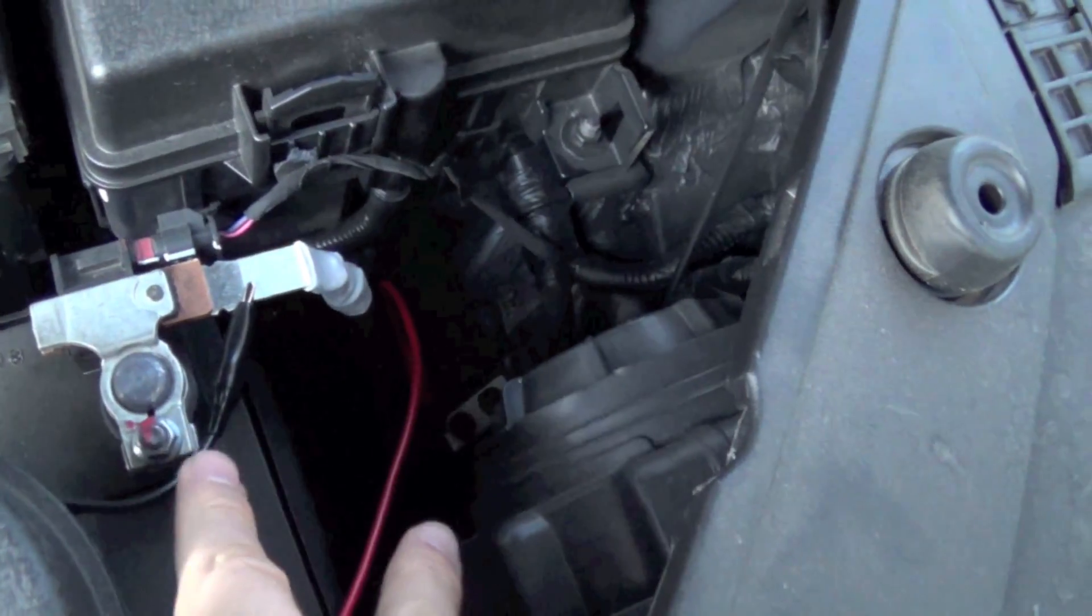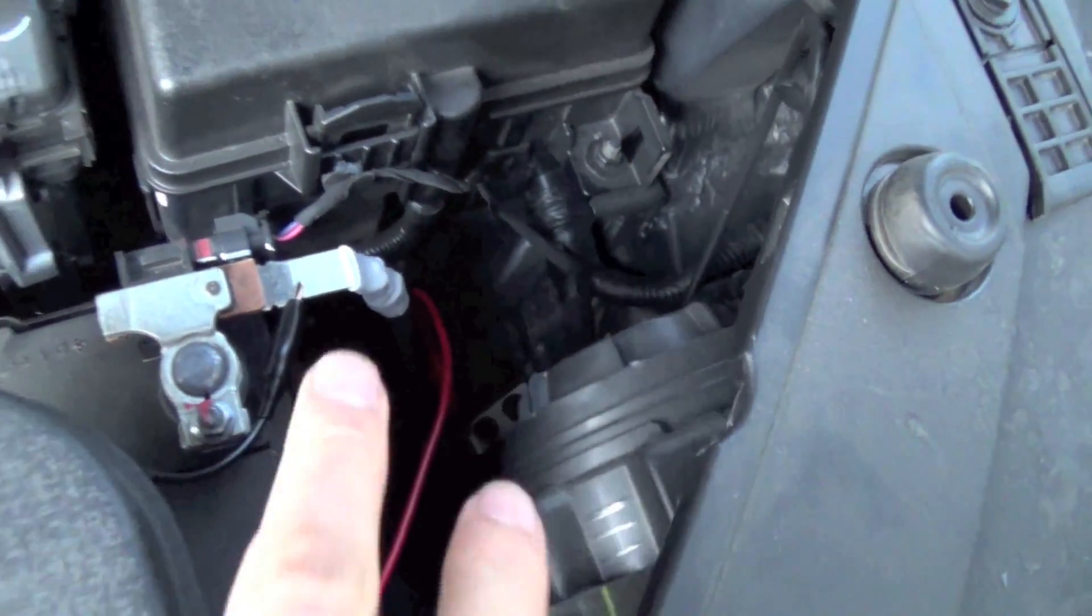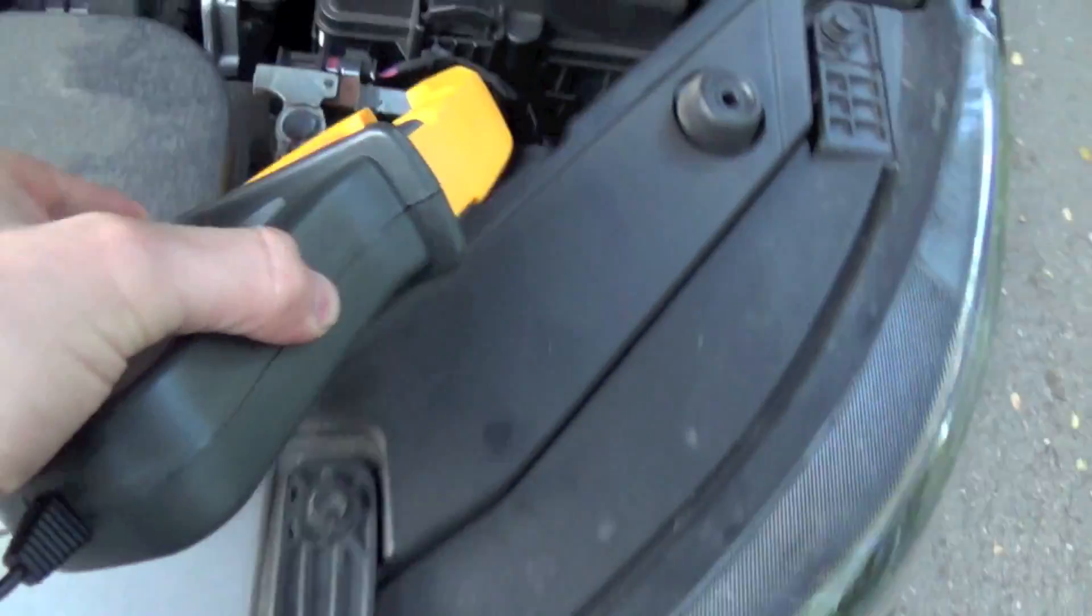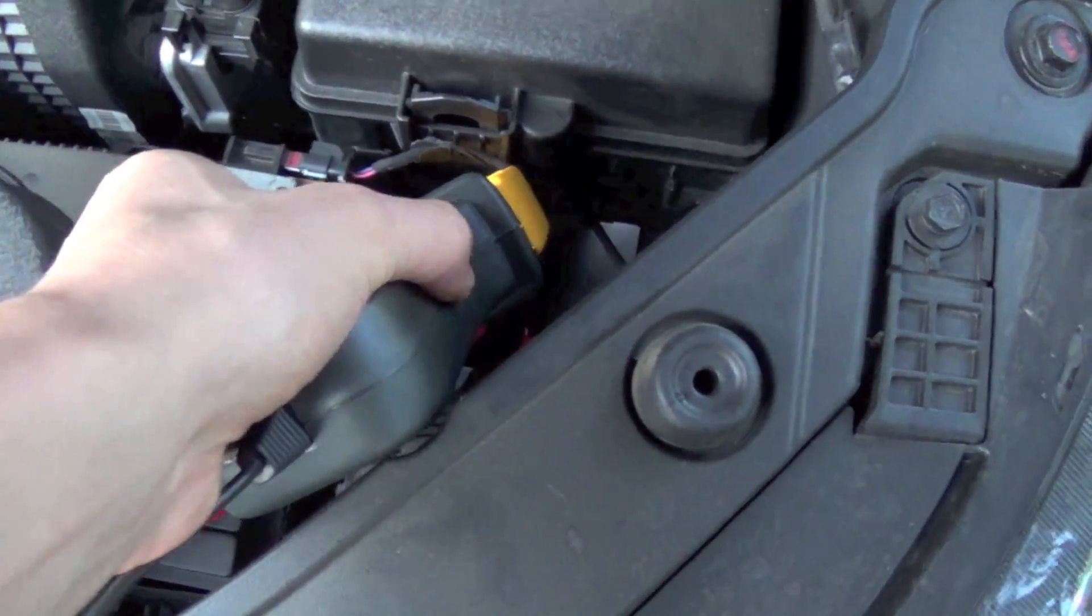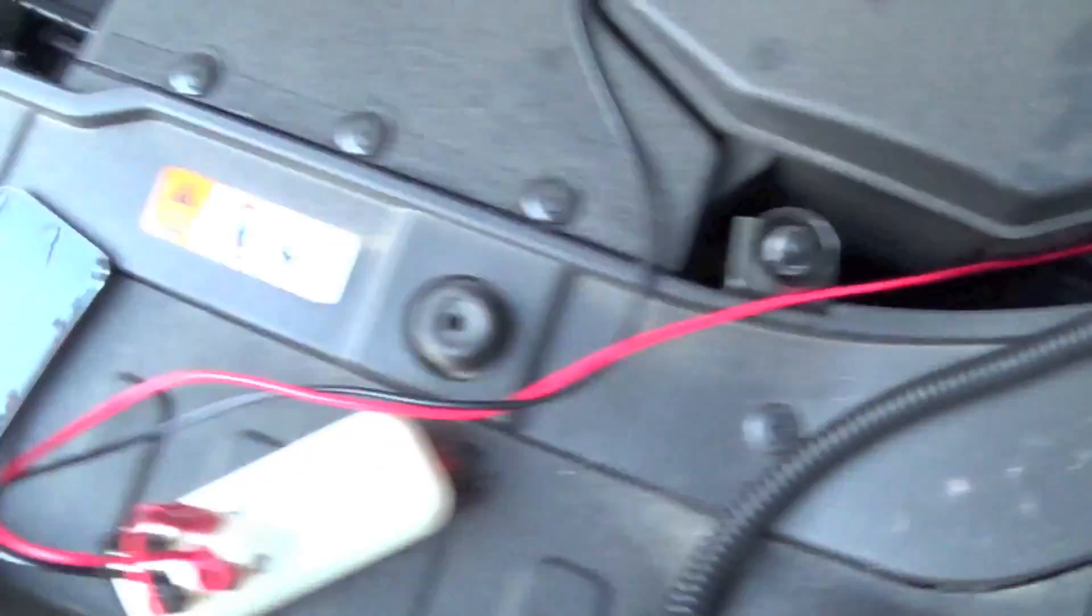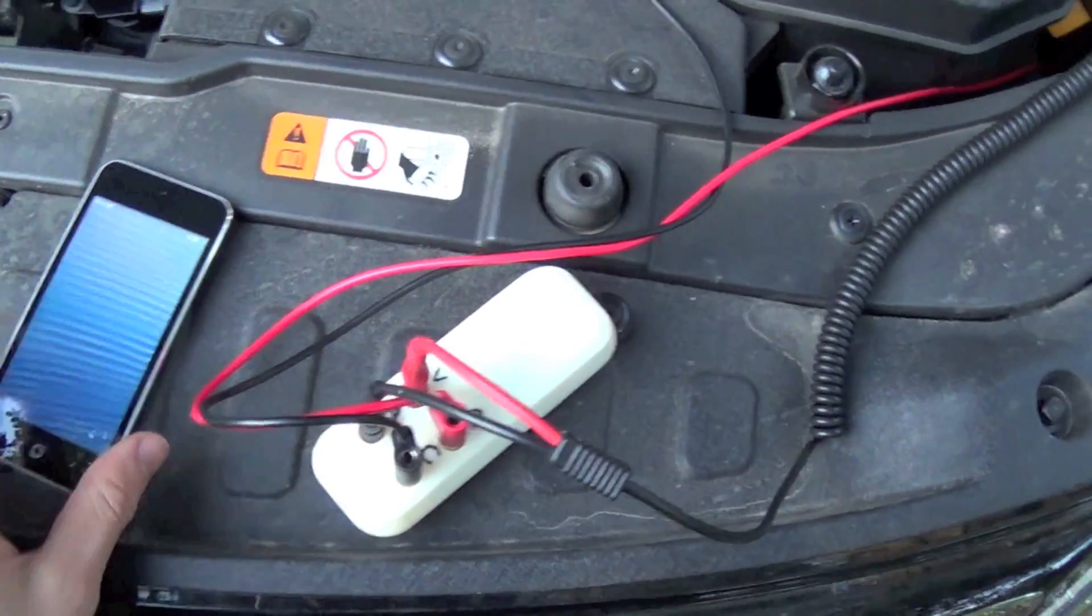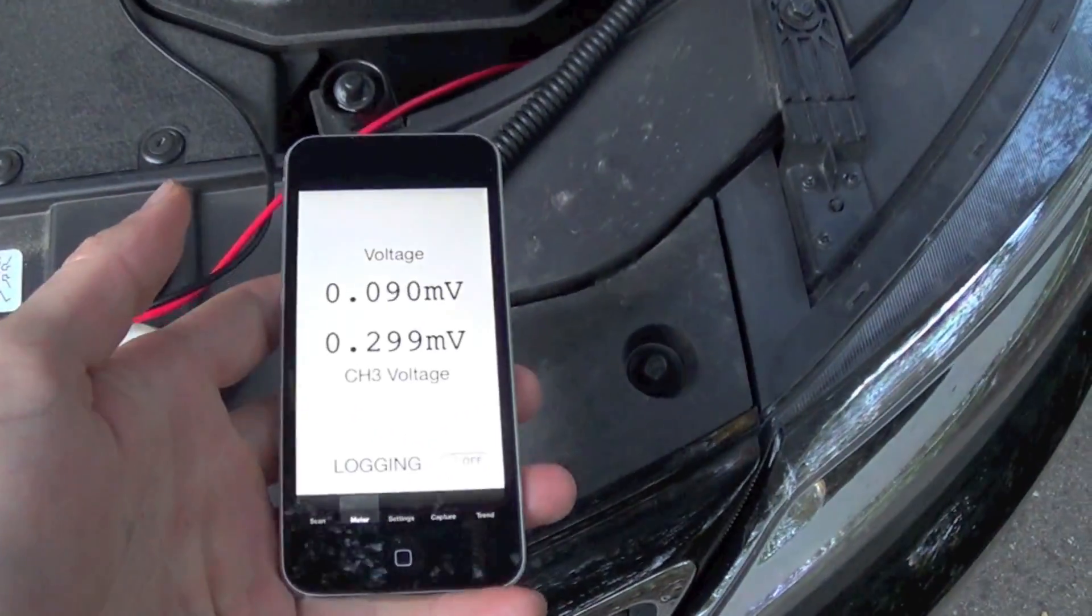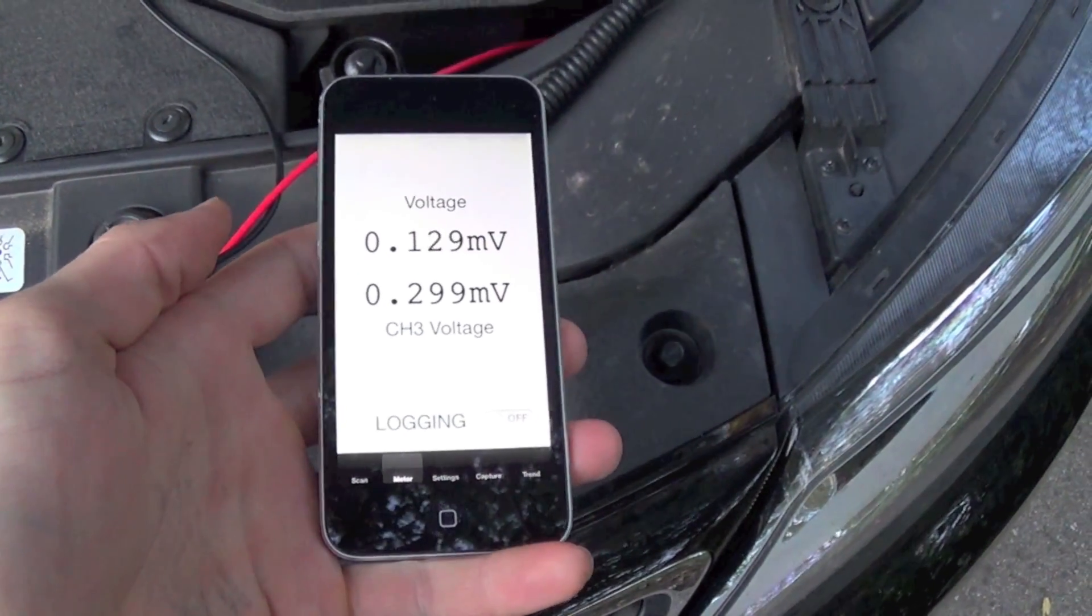So we have alligator clips across it, and to get the current through it, we're going to use a DC clamp meter. And to read it, we are using a Mooshimeter, and we're going to go inside the vehicle and check it out.